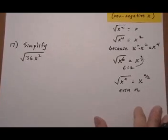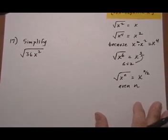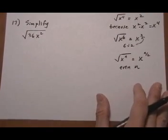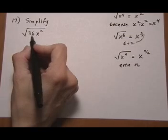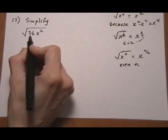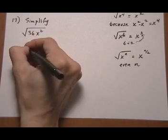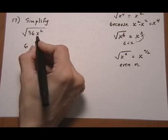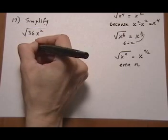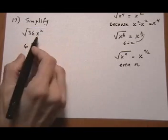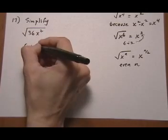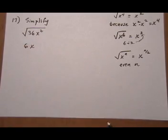On the next one, we have: simplify root 36 x squared. Well, we can think of them separately. First, let's do root 36 — that will give us a 6. And then we can do root of x squared. x times x gives us x squared, or think of it as power 2 divided by root 2, we get x.